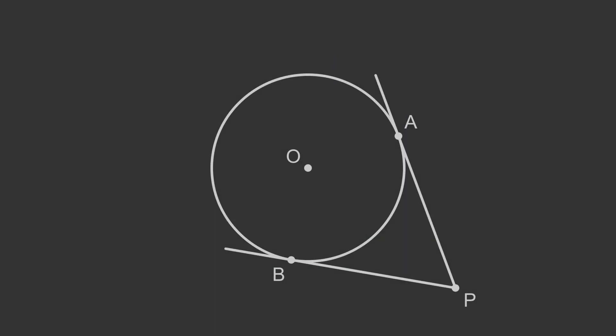Here is a circle with centre O. The point P is outside the circle. The two tangents touch the circle at points A and B. We aim to prove that the two tangents are equal — in other words, AP and BP are equal.